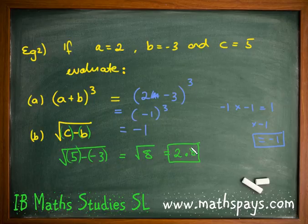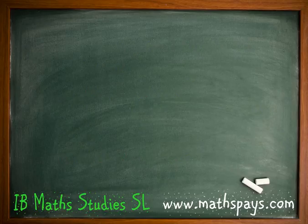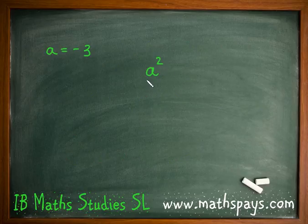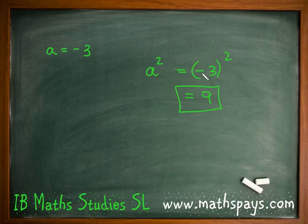Okay guys, in a nutshell, that is substitution — very, very basic stuff. But please be aware of the pitfalls. In particular, the one to be wary of is when you're given a value for the letter, say A equals negative 3, and they ask you to find the value of A squared. We must put the negative 3 into brackets to make sure it comes out as positive 9, not negative 9 — that is a really big mistake a lot of students make. Hope this was useful, guys. Have a crack at the questions and I'll see you later on.